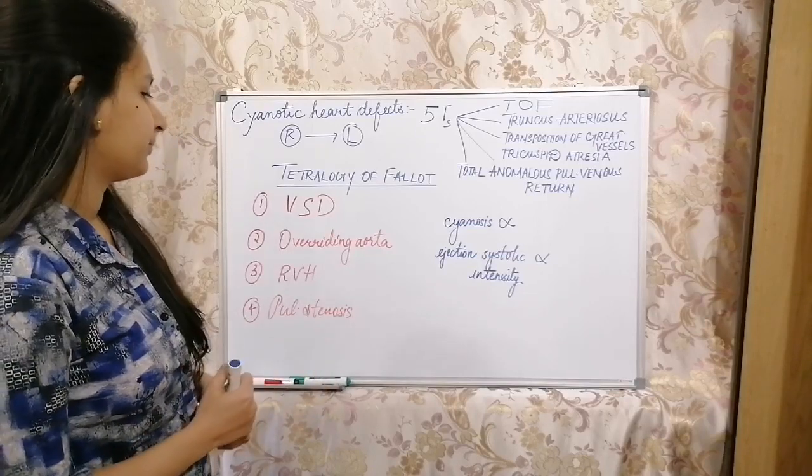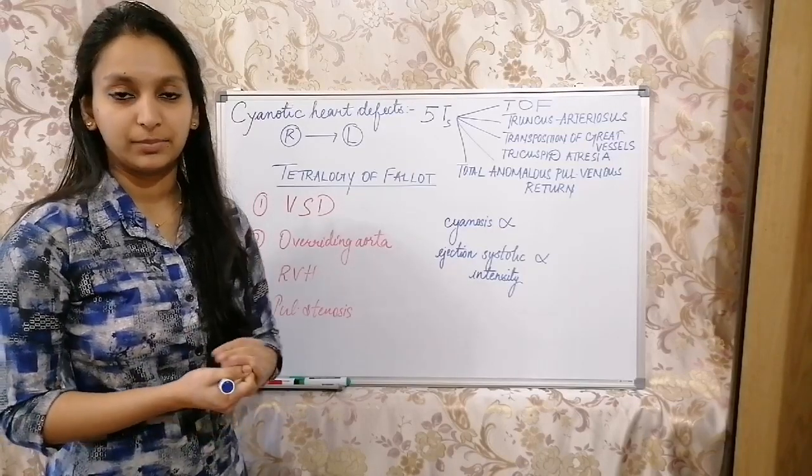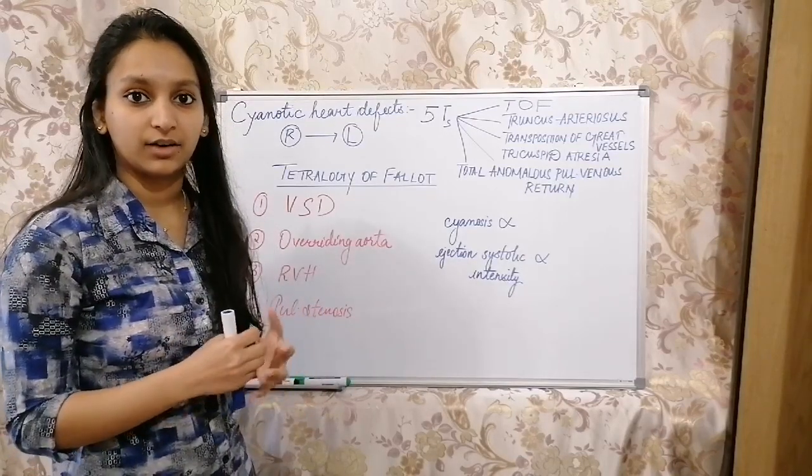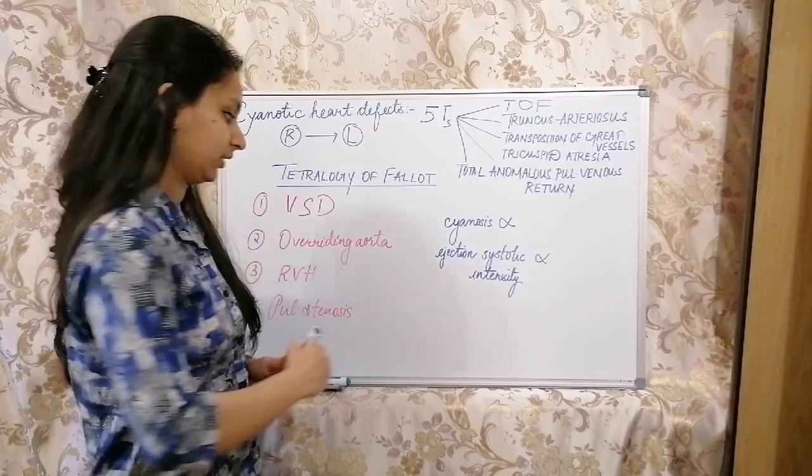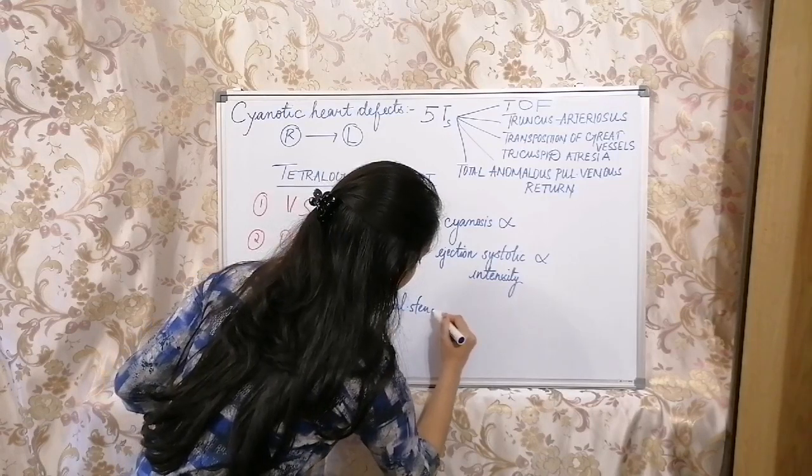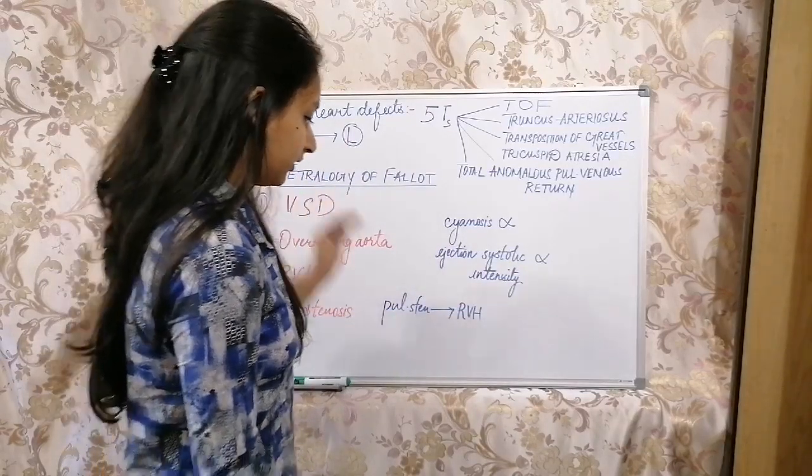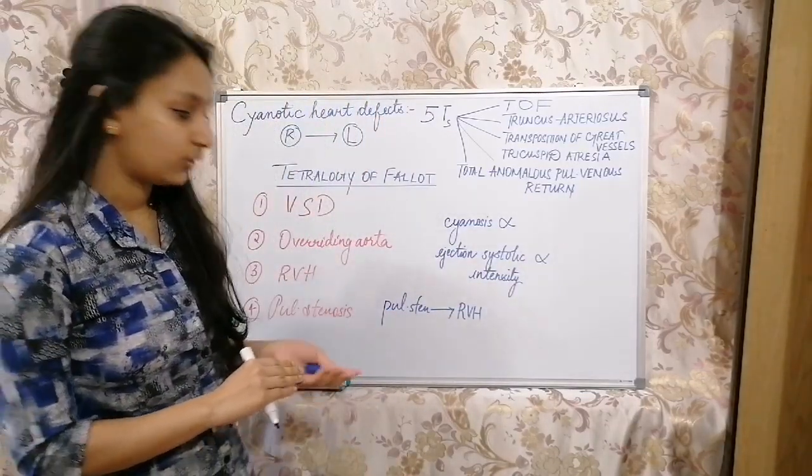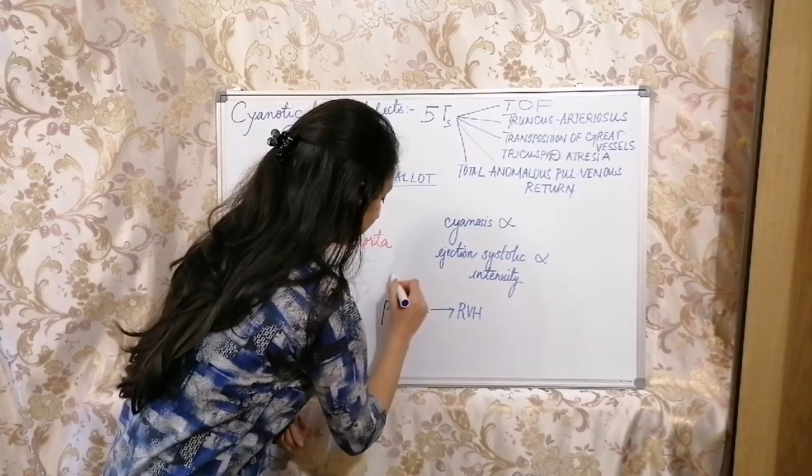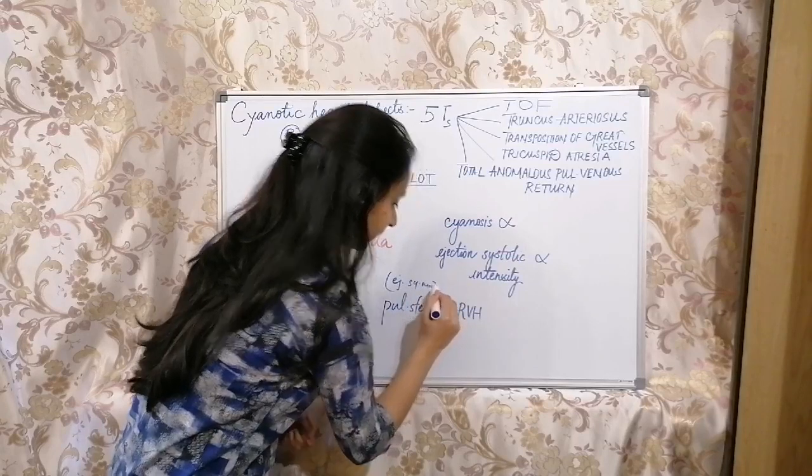What actually happens in Tetralogy of Fallot is due to pulmonary stenosis, the blood will not be flowing much to lungs. The blood will be staying back in right ventricle, leading to right ventricular hypertrophy. So pulmonary stenosis will result in right ventricular hypertrophy. Blood is flowing but with huge difficulty.